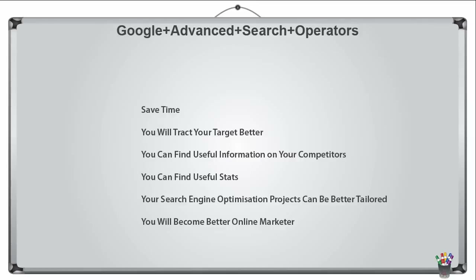Here's a quick example: you can search for 'inURL:keyword' AND 'intitle:index of' OR 'intext:weblizer' to find web server statistics pages. You can really expand your researching capabilities with Google advanced search operators, and your search engine optimization projects can be better tailored to your needs or your clients' needs.